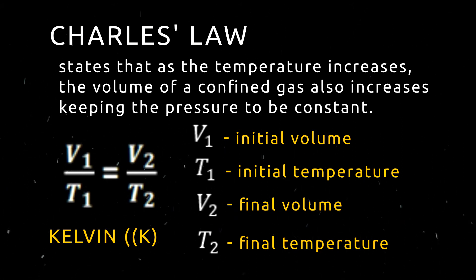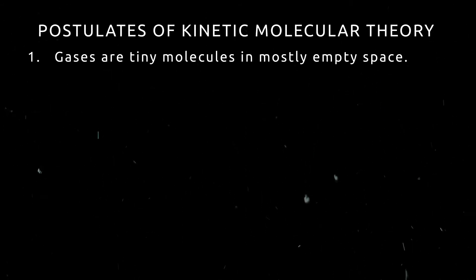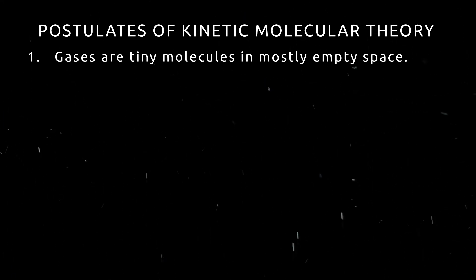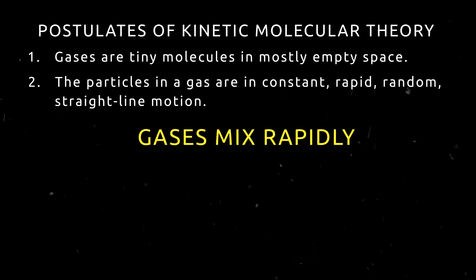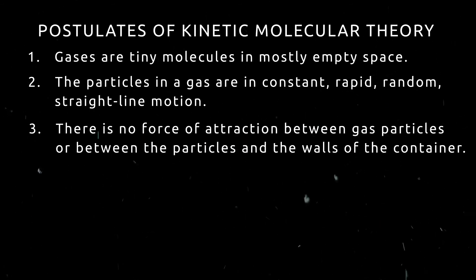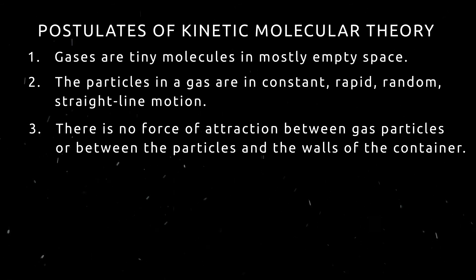Gas laws can be explained using the postulates of the kinetic molecular theory. The kinetic molecular theory, or KMT, describes the behavior of ideal gases at the particle level. Its postulates are as follows: Gases are tiny molecules in mostly empty space — the combined volume of gas particles is negligible and particles are much smaller than the distance between them, evidenced by the fact that gases are easily compressed. The particles in a gas are in constant, rapid, random, straight-line motion — evidenced by the fact that gases mix rapidly. There is no force of attraction between gas particles or between the particles and the walls of the container — evidenced by gases not clumping but scattering throughout.